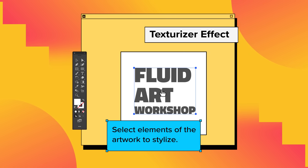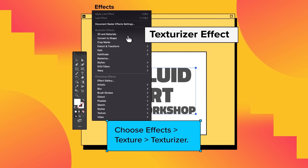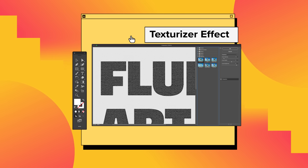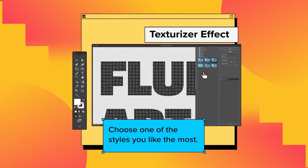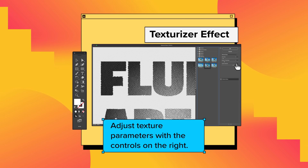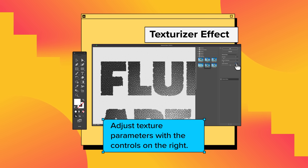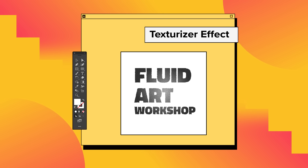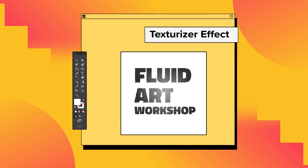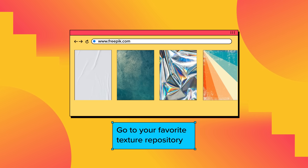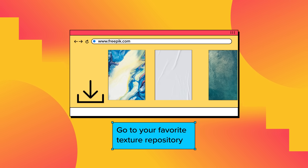Let's start with the Texturizer effect. Select elements of the artwork to stylize and choose Effects > Texture > Texturizer. Choose one of the styles you like the most and adjust the texture parameters with the controls on the right. The texture will apply to bold strokes and fills of your selected artwork.